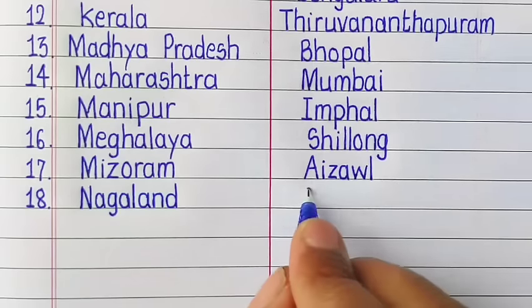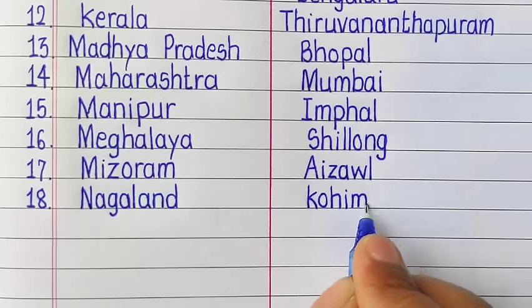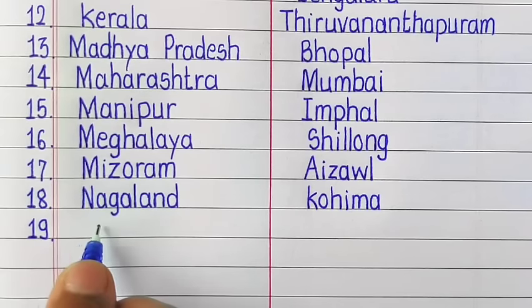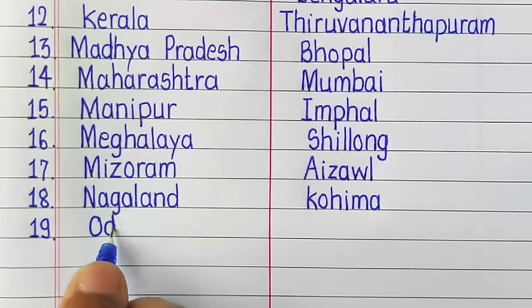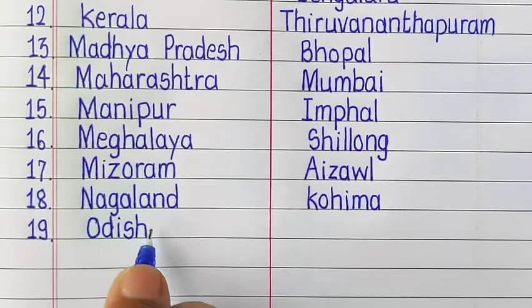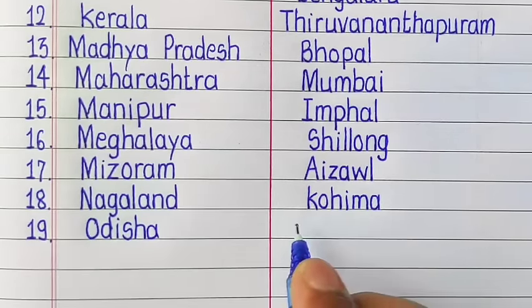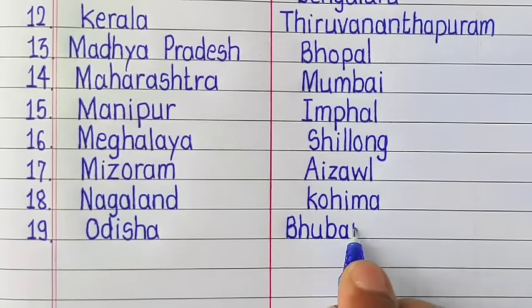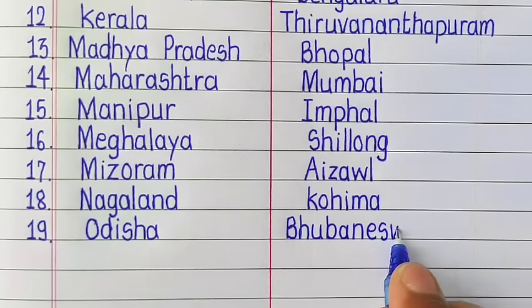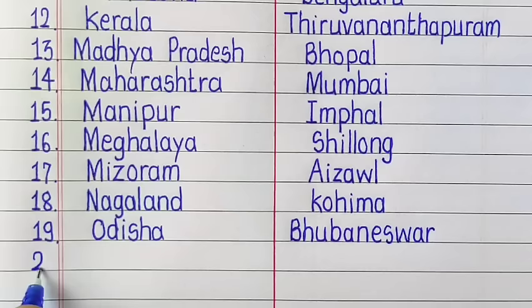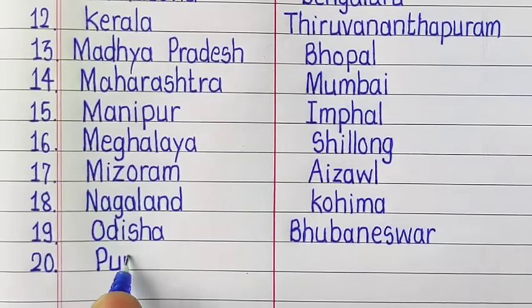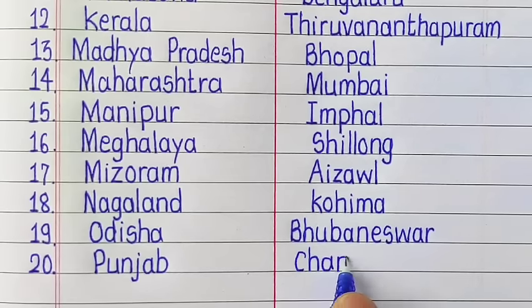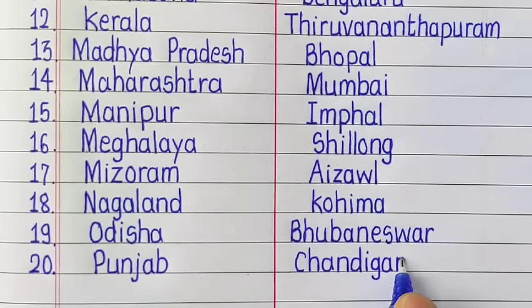Nagaland — Kohima. Odisha — Bhubaneswar. Punjab — Chandigarh.